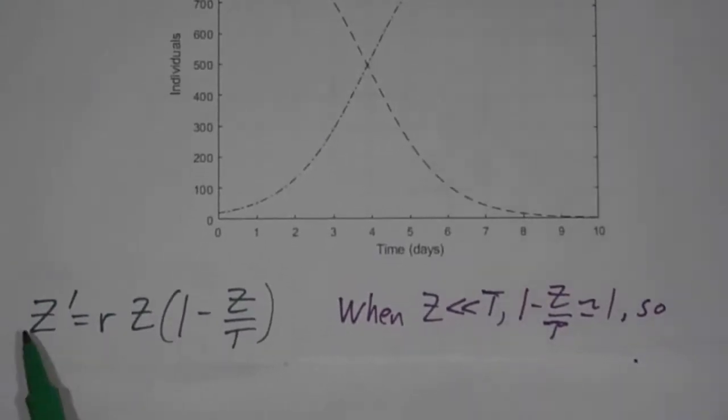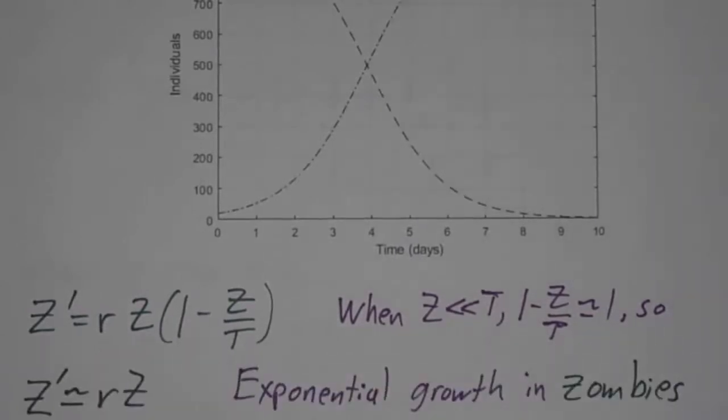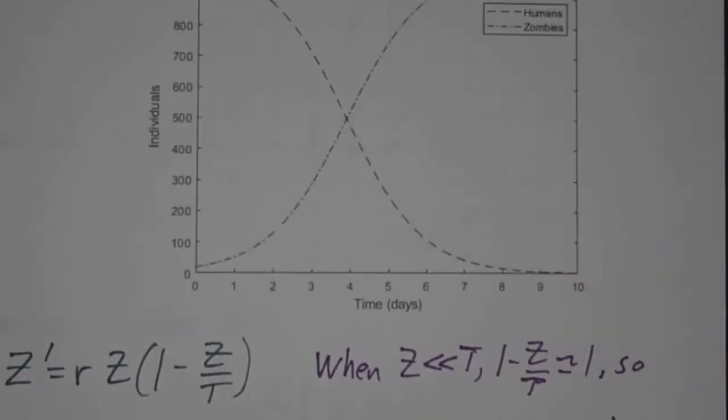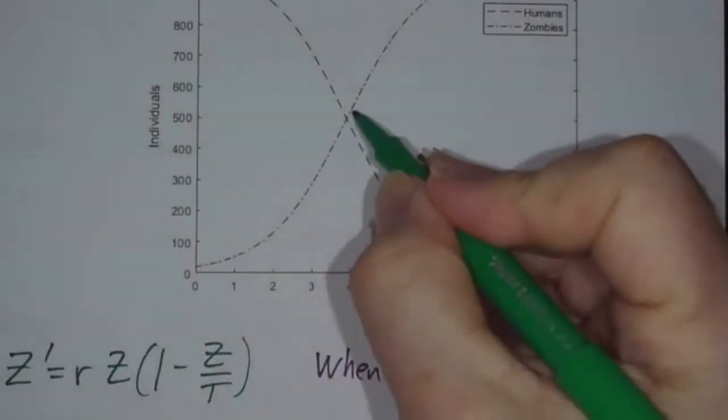Let's see why that works. The equation is Z' = RZ(1 - Z/T). At the beginning, when most people are still human and the number of zombies is much less than the total population, Z/T is much less than 1, and 1 - Z/T is pretty much 1. So this is approximately RZ. When Z' = RZ, you get exponential growth, so in the early stage the number of zombies grows exponentially.